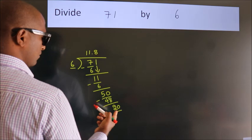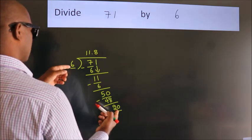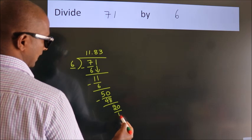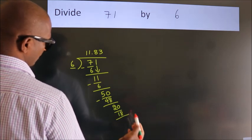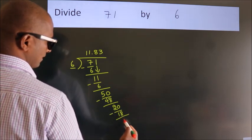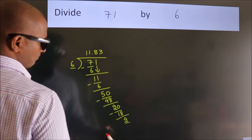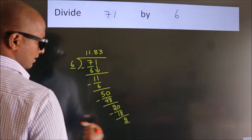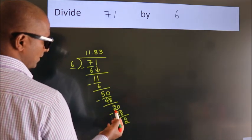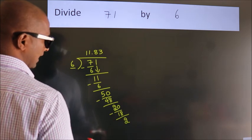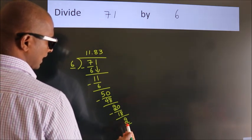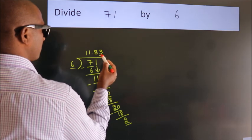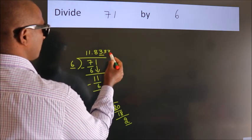A number close to 20 in the 6 table is 6 times 3 is 18. Now we subtract. We get 2. Now you observe — we had 2 here and we got 2 again. That means this number keeps on repeating.